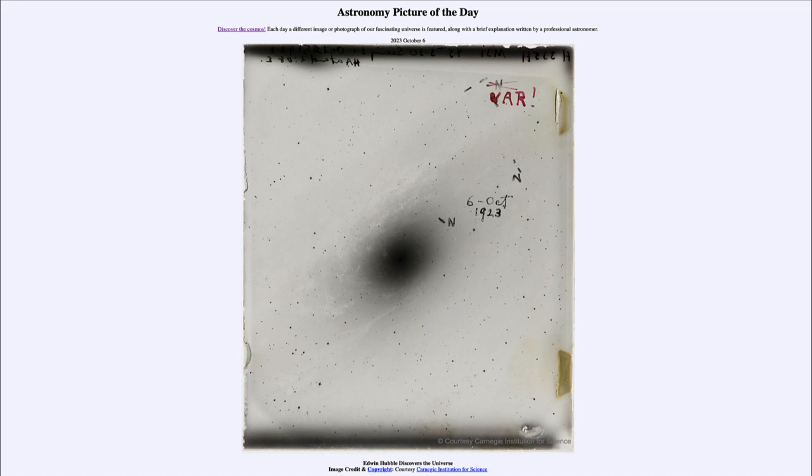So what was done here is observation of variable stars. How did that help? Well, when we learned that certain types of variable stars called Cepheid variables have a relationship between their variability, so how long it takes them to go from bright to faint and back to bright again, and their actual brightness.